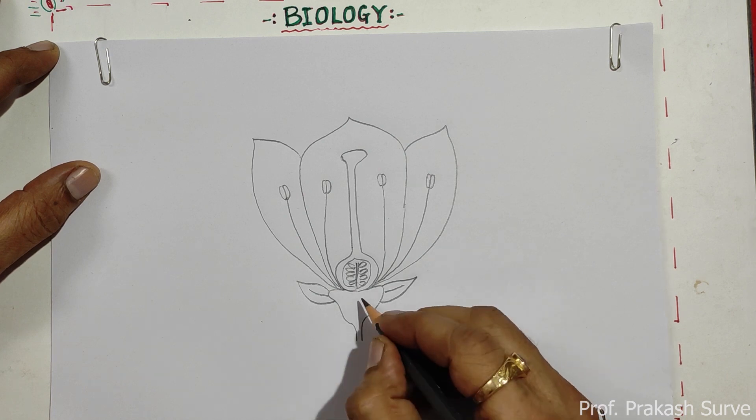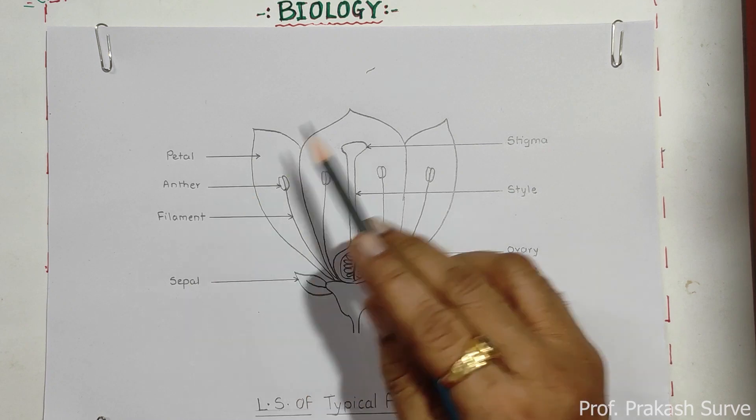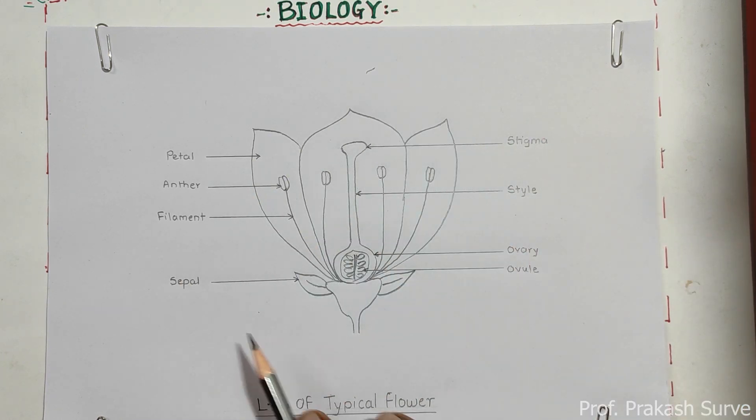So this is your complete flower. That is the LS of a flower. So this is a complete diagram of LS of a typical flower with all the labels.